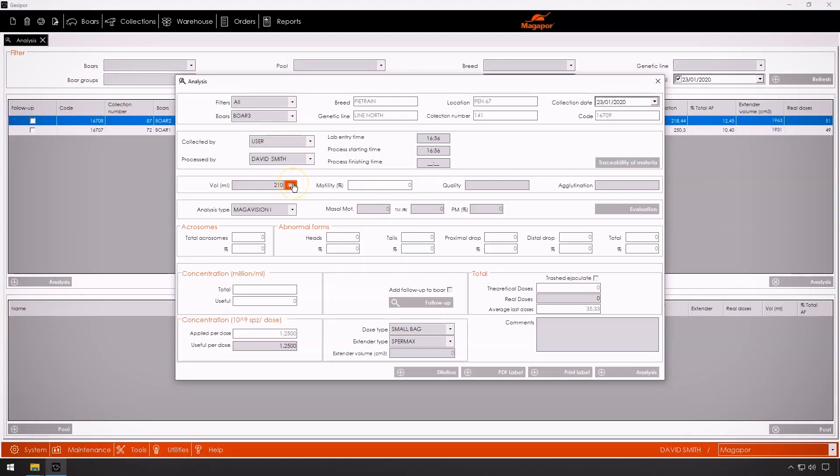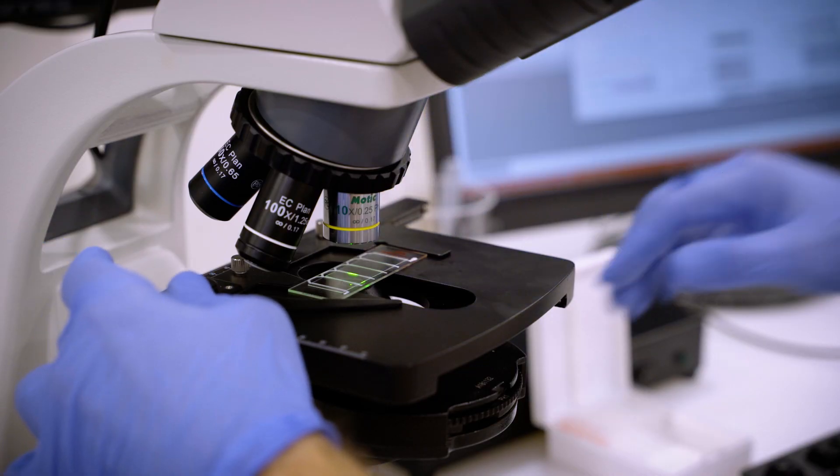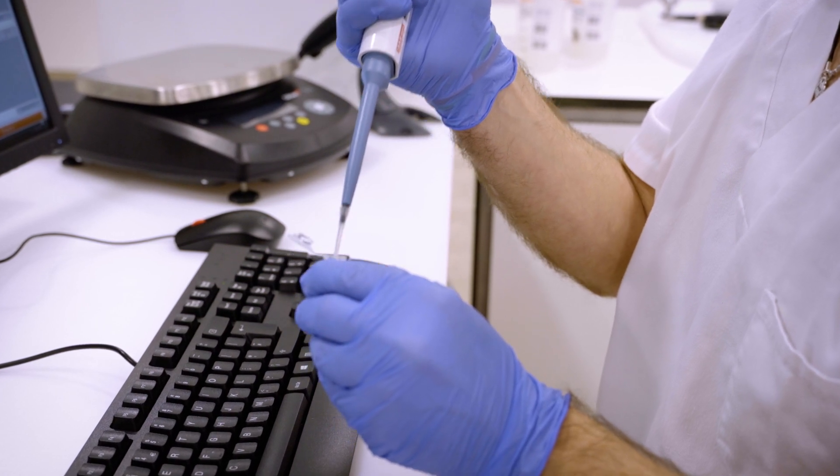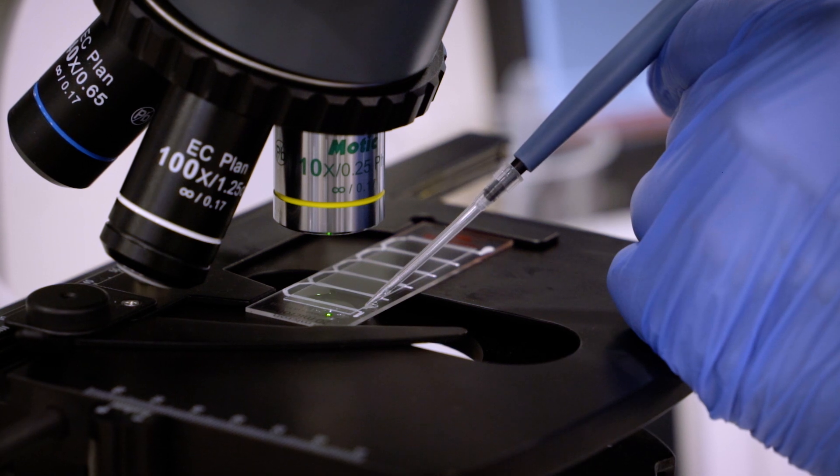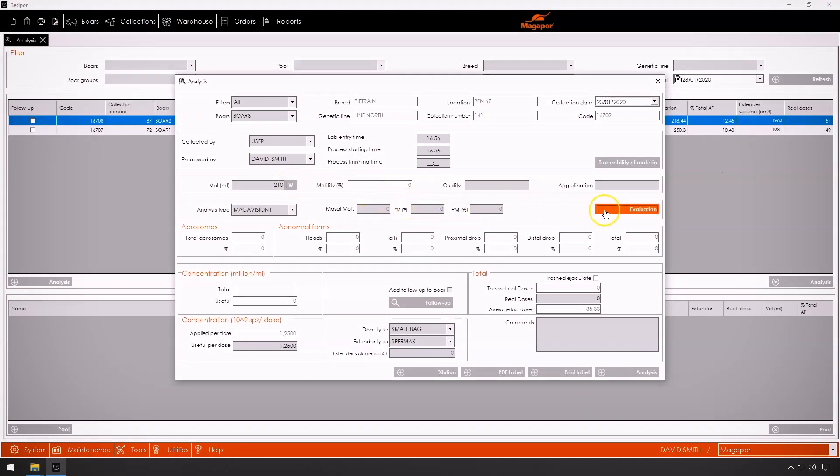Through a scale connected to the software, we automatically enter the volume of the ejaculate. After loading the sample and using a simple and intuitive interface, Magavision allows the user to carry out the analysis of the quality of that ejaculate in just a minute and a half.